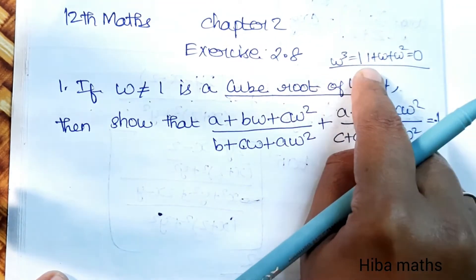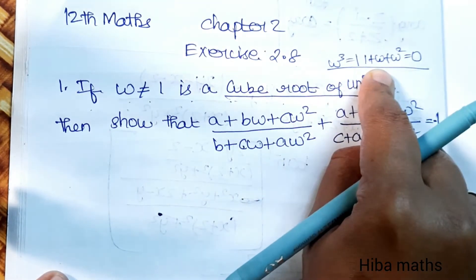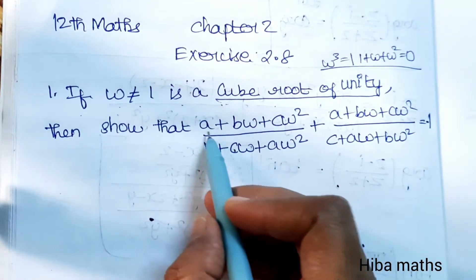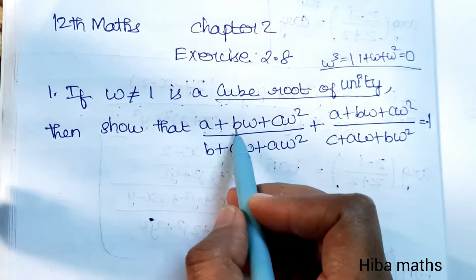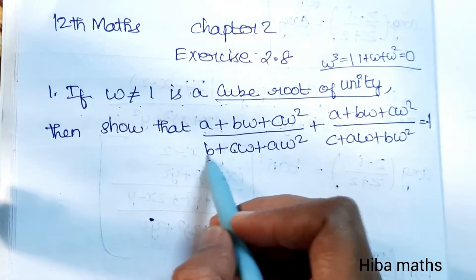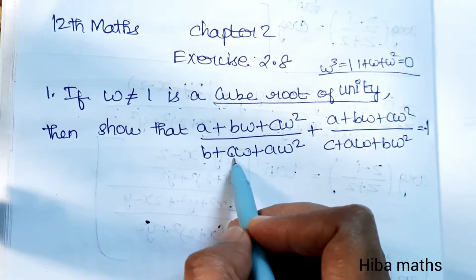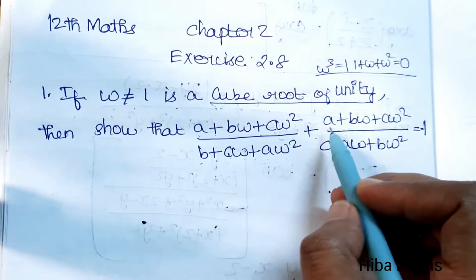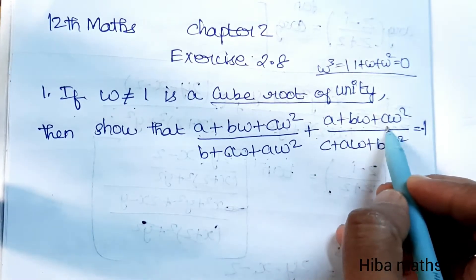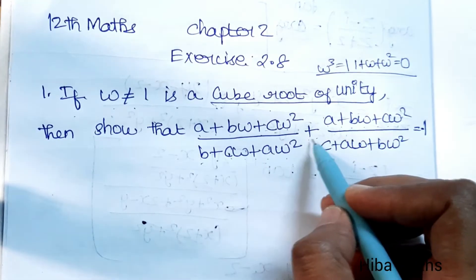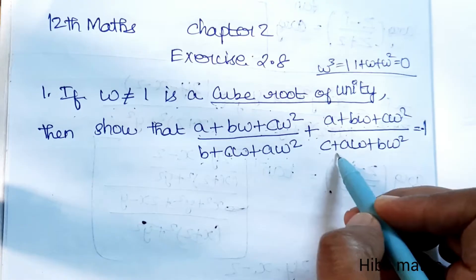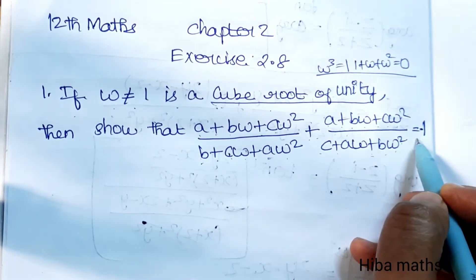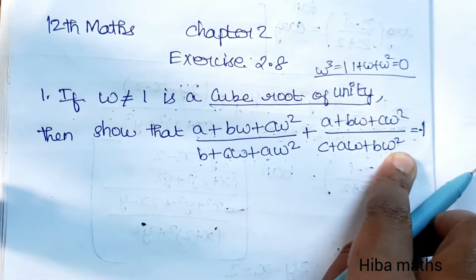Given omega cubed equals 1 and 1 plus omega plus omega squared equals 0, show that: (A plus B·omega plus C·omega²) divided by (B plus C·omega plus A·omega²), plus (A plus B·omega plus C·omega²) squared, is equal to minus 1.